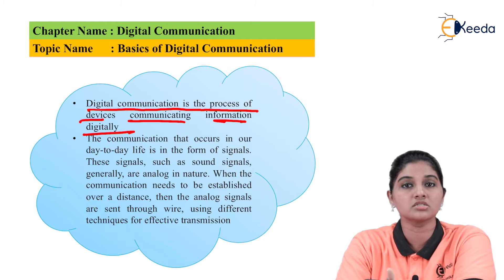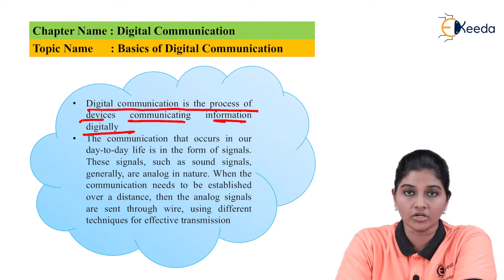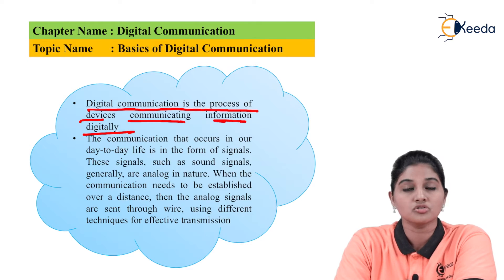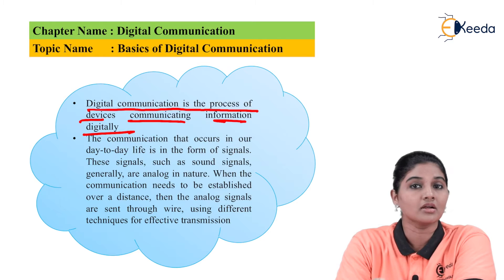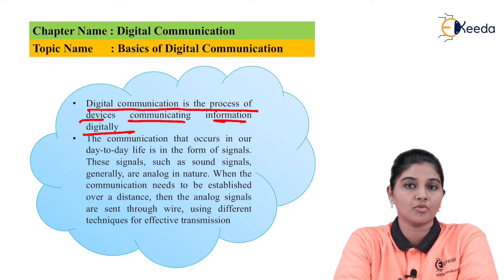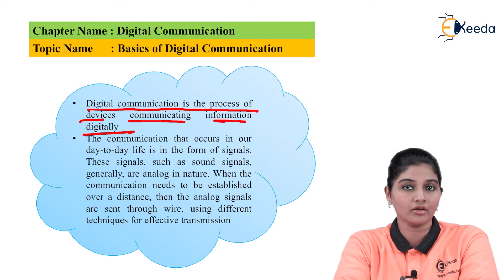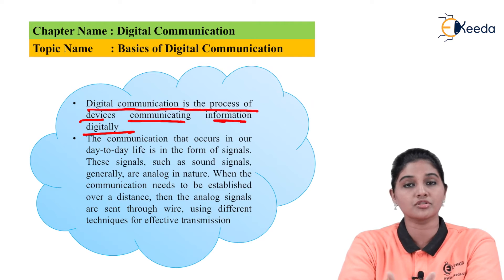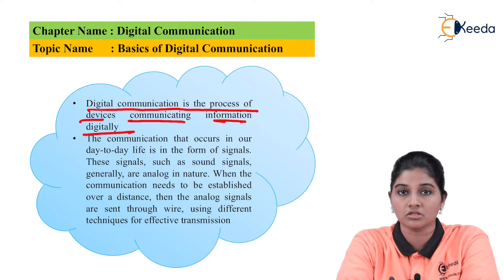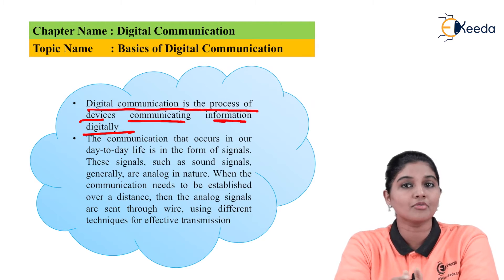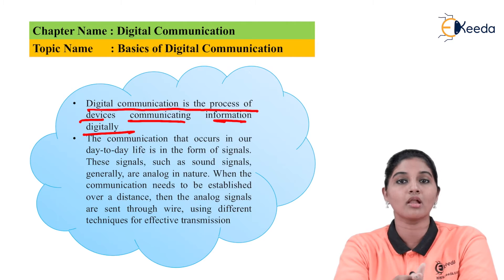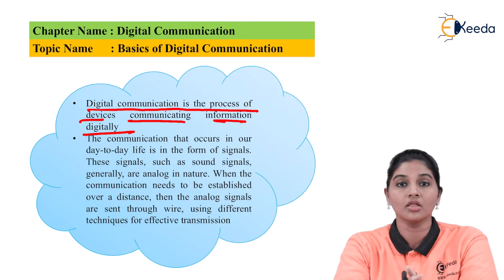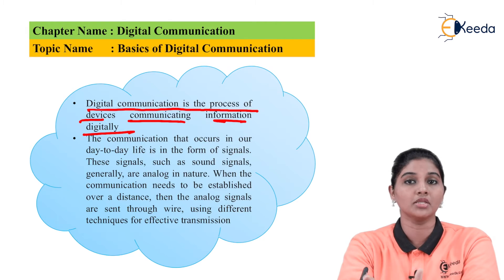For example, if we consider a sound signal, it is analog in nature — meaning it varies continuously with respect to time. Whenever we want to transmit such a signal, we use a wire or a repeater. Such signals that change continuously with respect to time are called analog signals. Sound signal is an example of an analog signal. When transmitting over a large distance, we require repeaters and many more circuits.